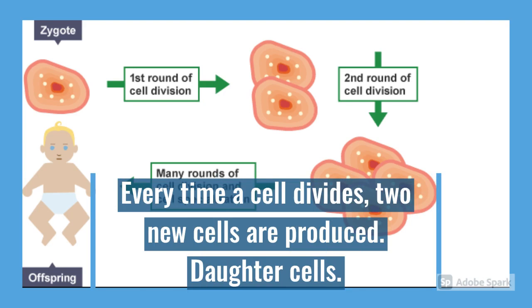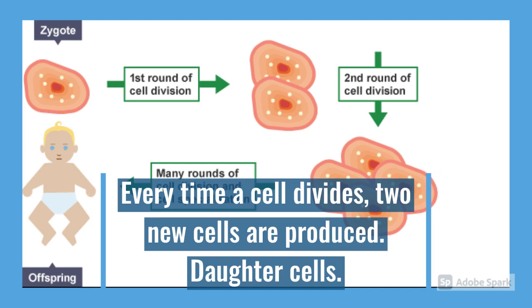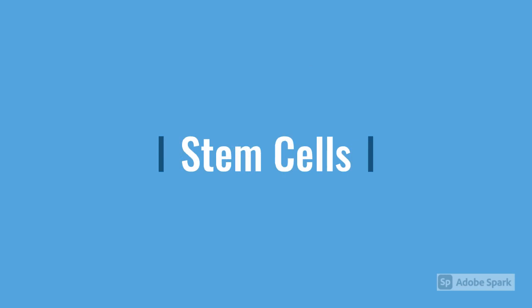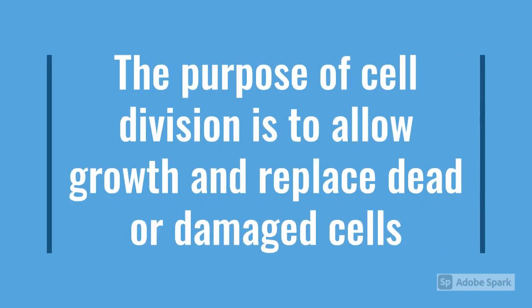A really good example of this is shown by the process of a developing baby. It starts off as a single cell. When the cell divides, it produces two new cells called daughter cells. Then the daughter cells divide and four cells are made. The first cell is known as the parent cell. But cell division doesn't just stop after a baby is made — it actually continues inside even adults in areas with cells called stem cells. Stem cells are unspecialized cells that are used for cell division. Specialized cells cannot divide in the body anymore. I will talk more about stem cells in my next video, so stay tuned for that.